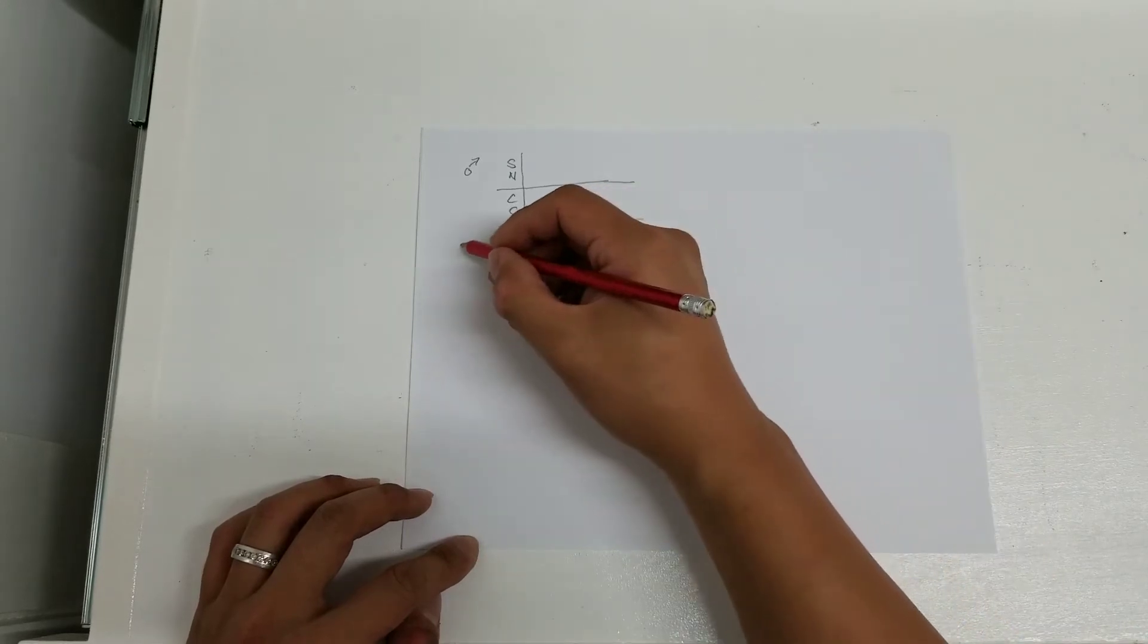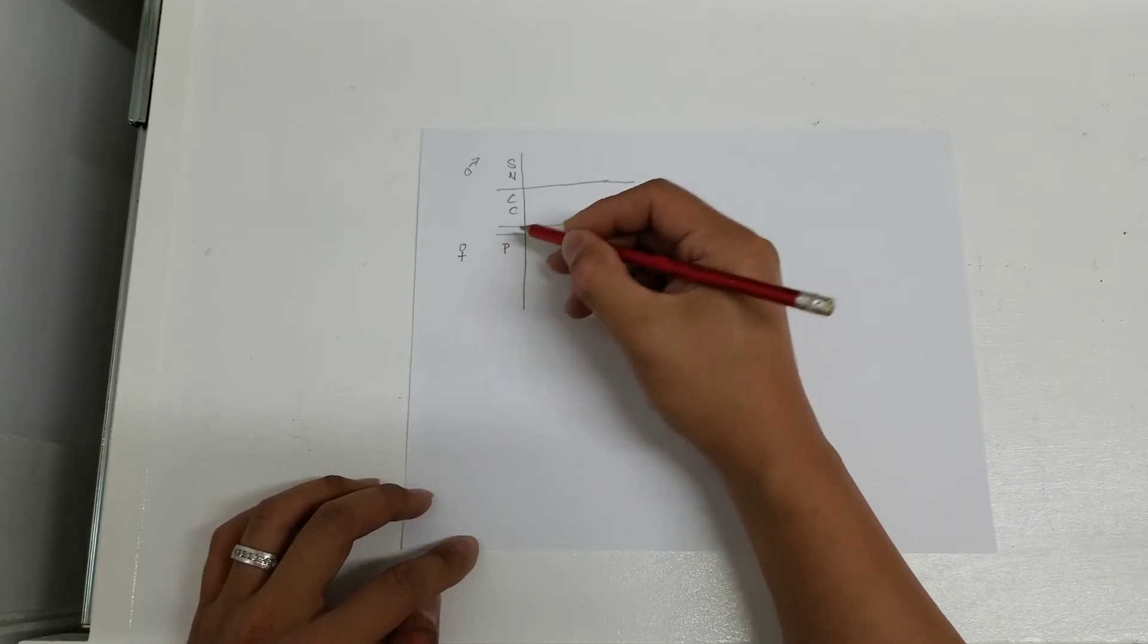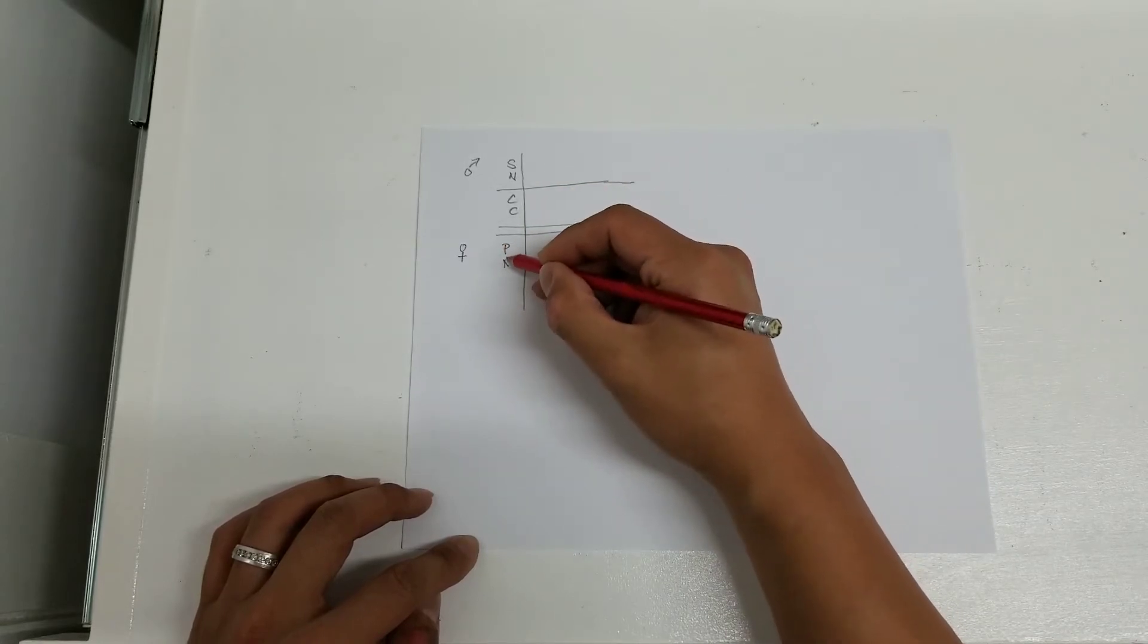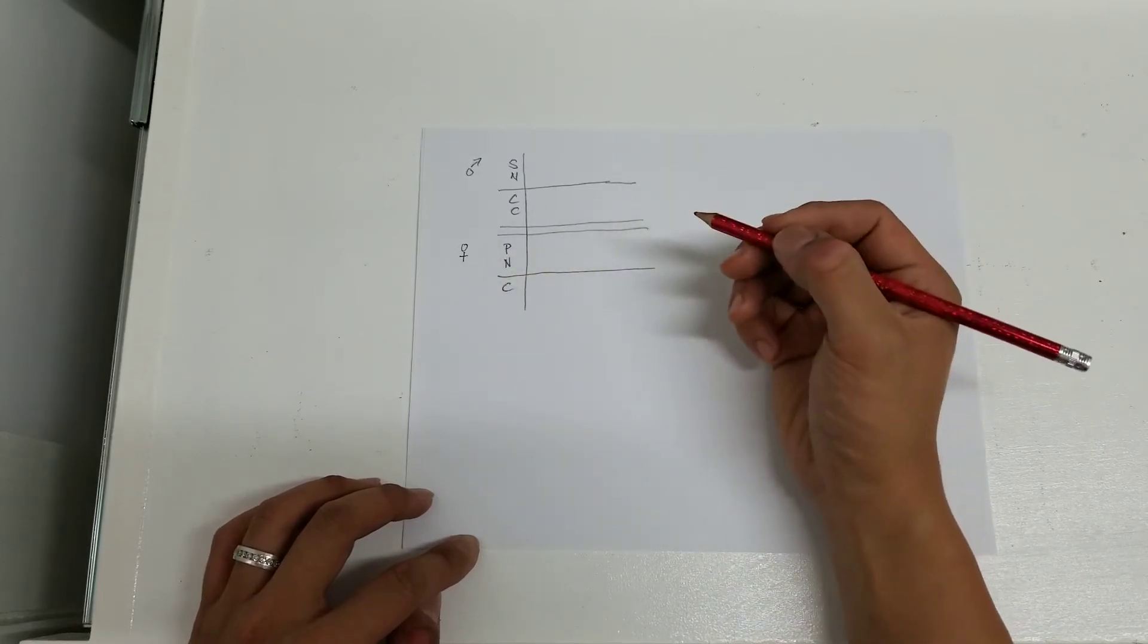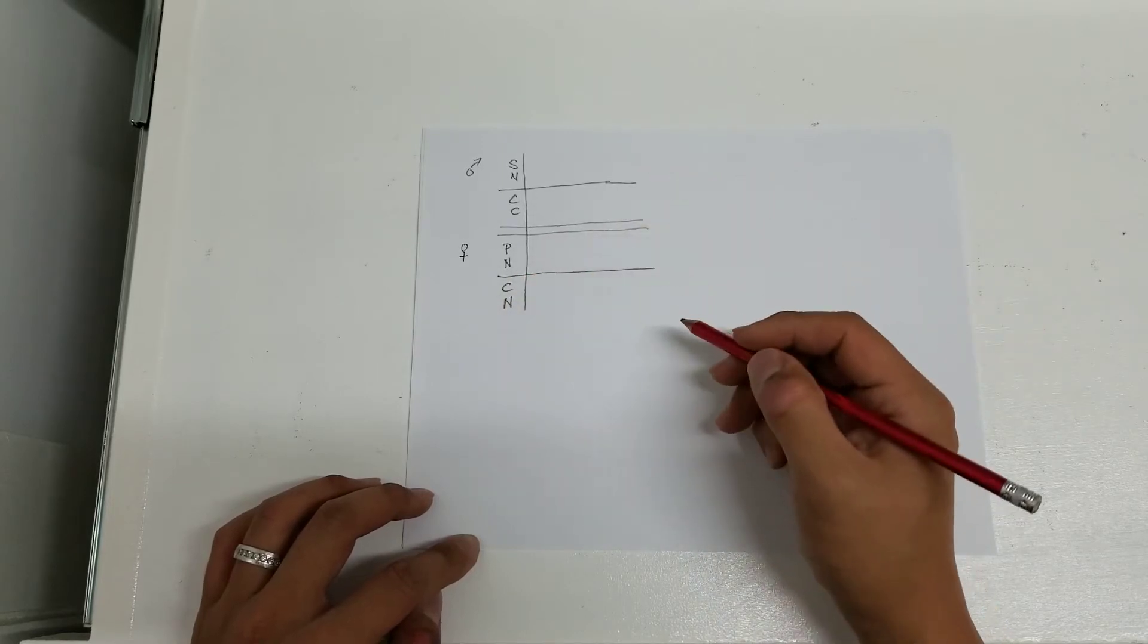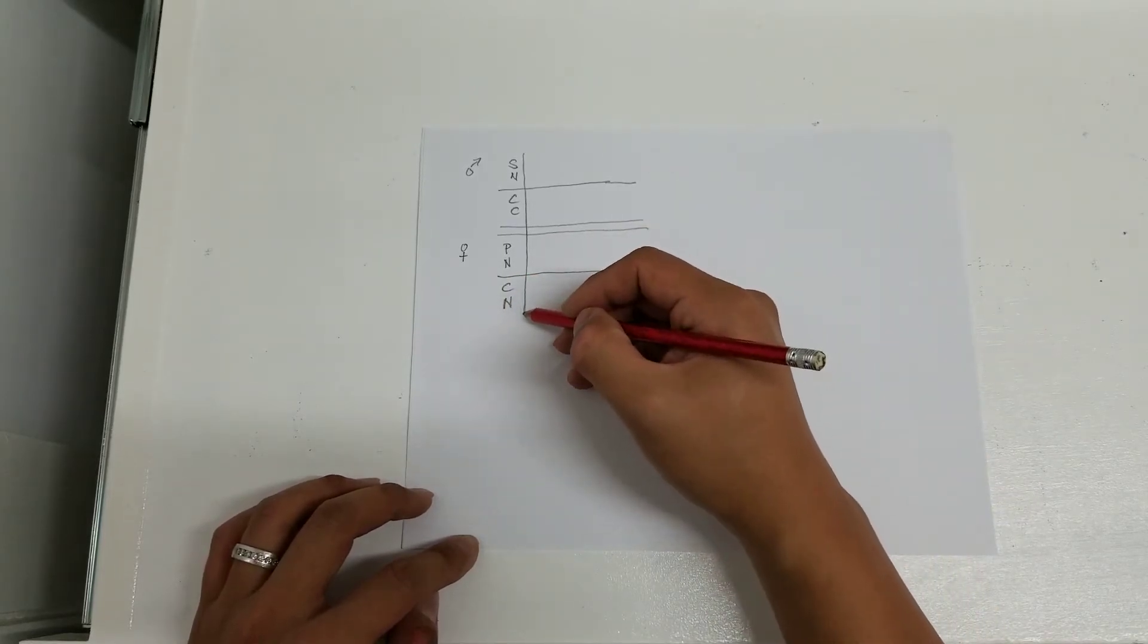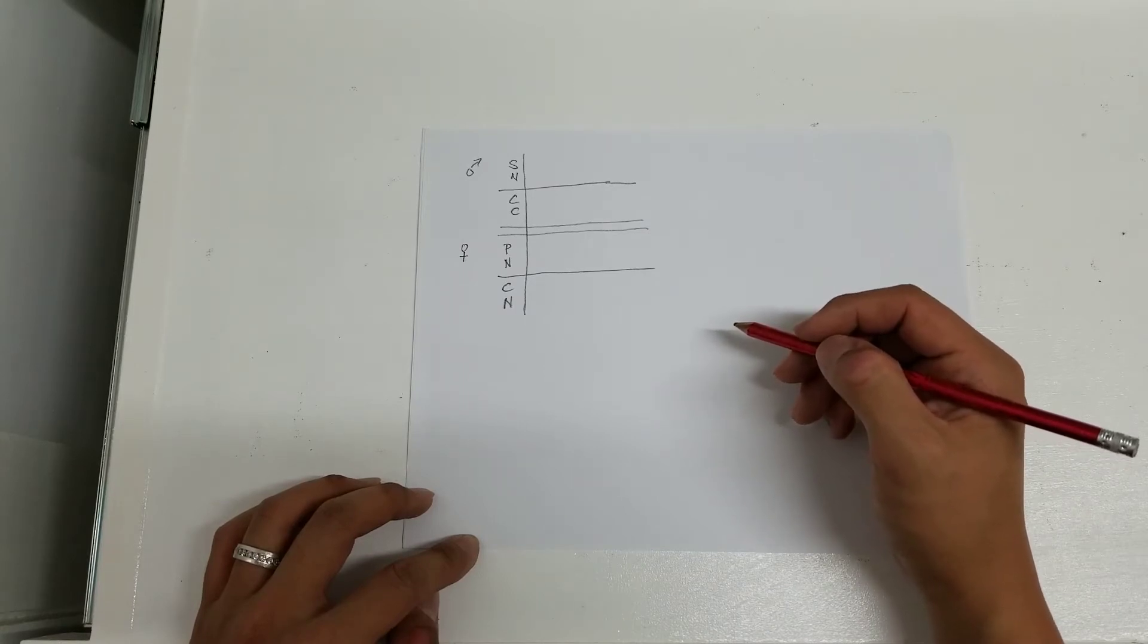Now the female, as you saw, she is a pastel, single gene pastel, not a super. She is het for clown, so she's only got one copy of the clown gene. And the other gene on that allele—sorry, the other gene on that locus is a normal.